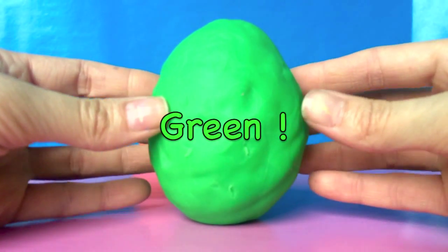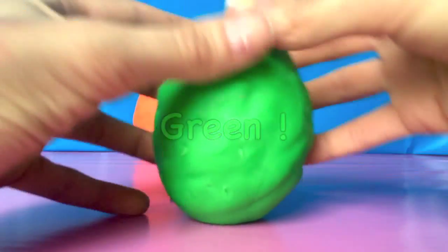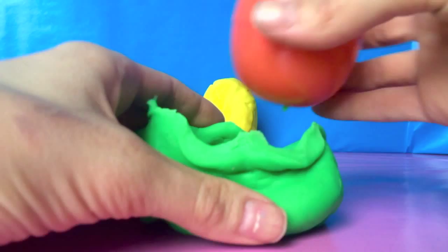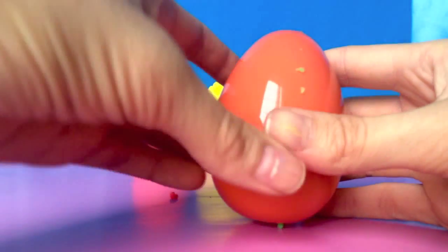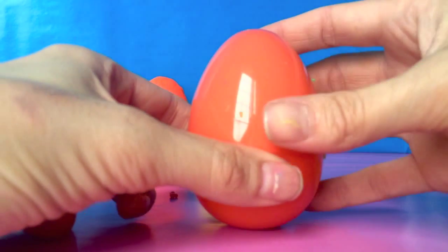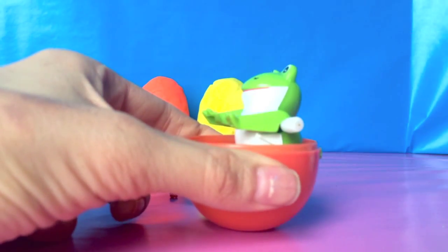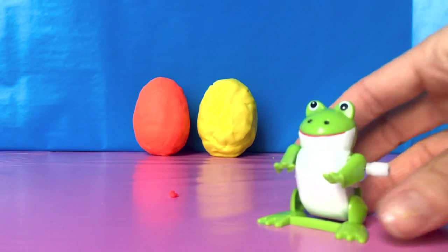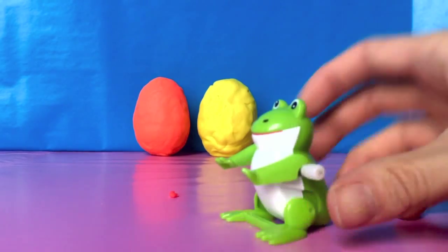This pretty egg is green! And here is an orange egg! Let's look inside! It's a frog! Ribbit! Ribbit!